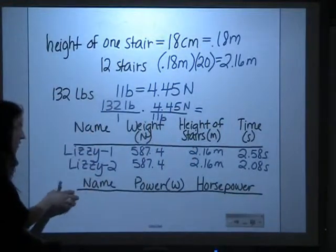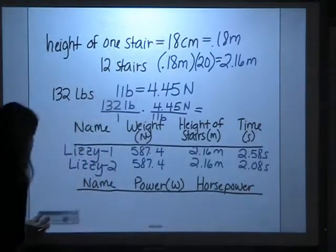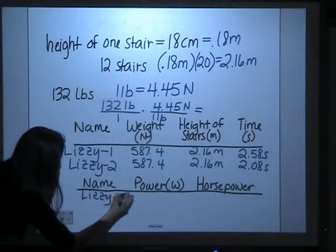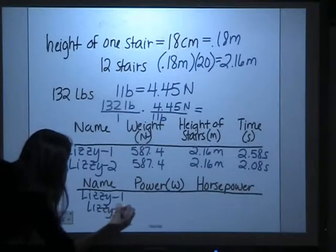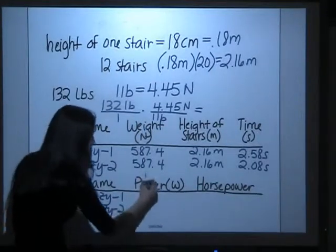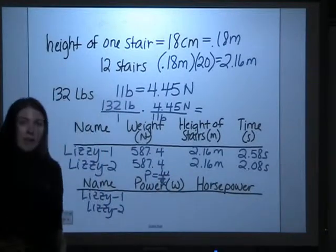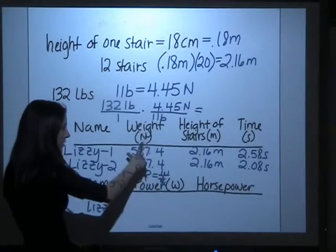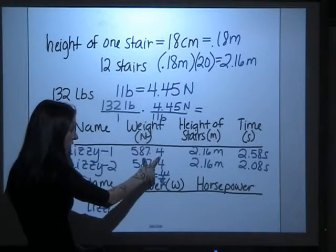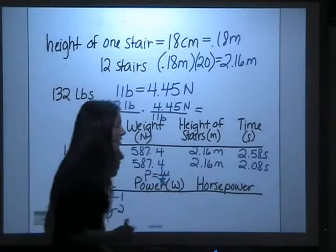This is one data table, and now this is the calculations table. Again, list the same names that you had up here. So in our case, we have Lizzie 1 and Lizzie 2. The next thing we need to do is calculate her power. Remember the power equation is power equals work divided by time. Work divided by time. To figure out the work, it's the force times the distance. So to get the power, we'll take 587.4 times 2.16 and divide it by the time in seconds, which is 2.58.